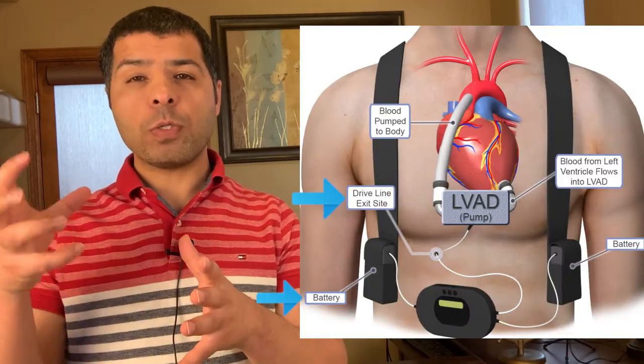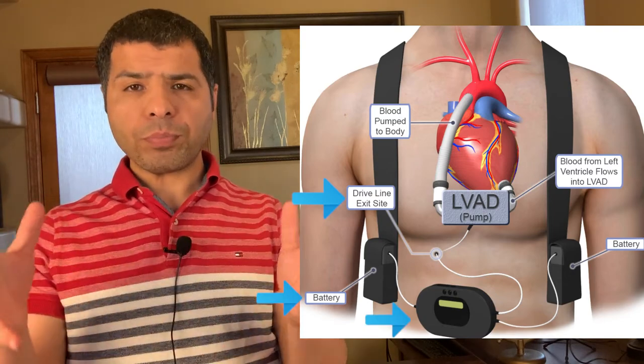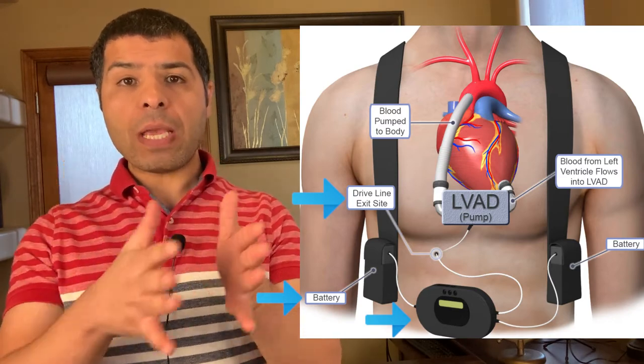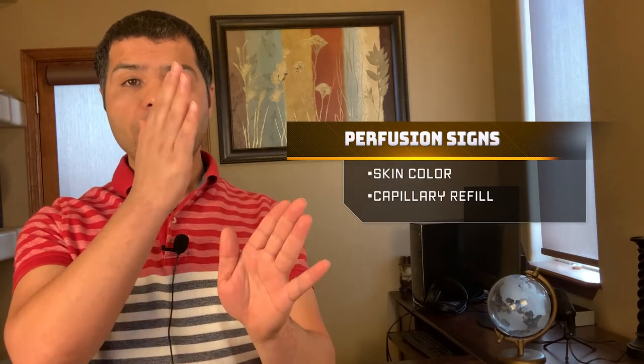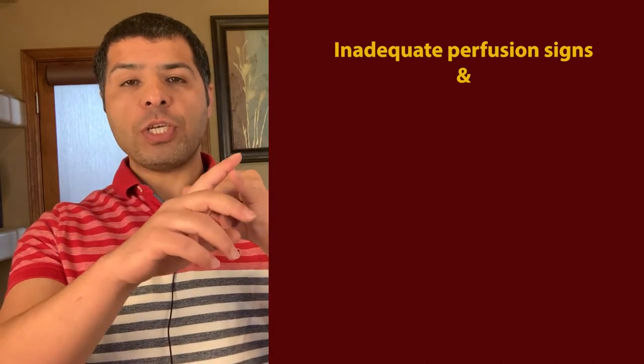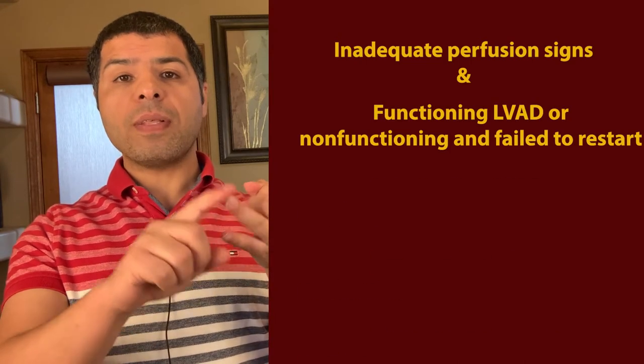Check if the driveline is connected, if the battery is dead and needs replacement, if the power source is connected, and if the system controller needs to be replaced. If you successfully restart the LVAD machine, check the perfusion signs again — they should restore — and you can also check blood pressure at that point. If you fail to restart the LVAD machine, or if the LVAD was functioning but there are still poor perfusion signs, then we need to check two things immediately.